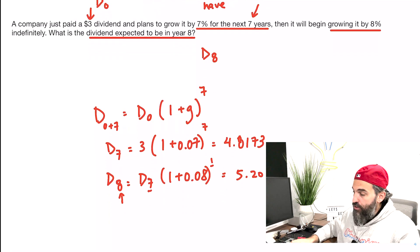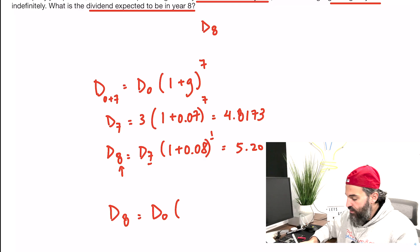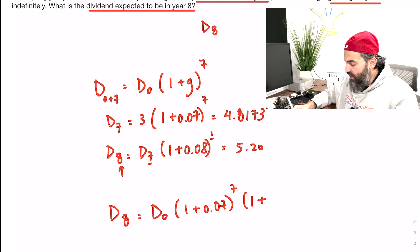Now, the more comfortable you get with this, the more you can start doing together. Now, you realize that to find D8, I could have started with D0, multiplied it by 1 plus 0.07 to the 7, and then multiply that by 1.08 to the 1.